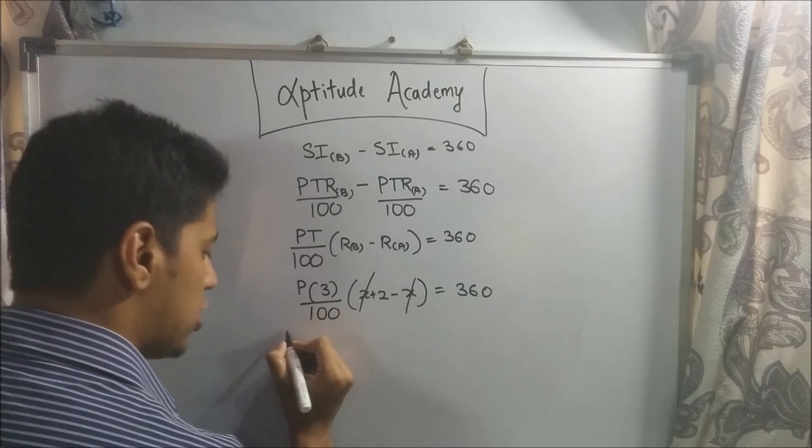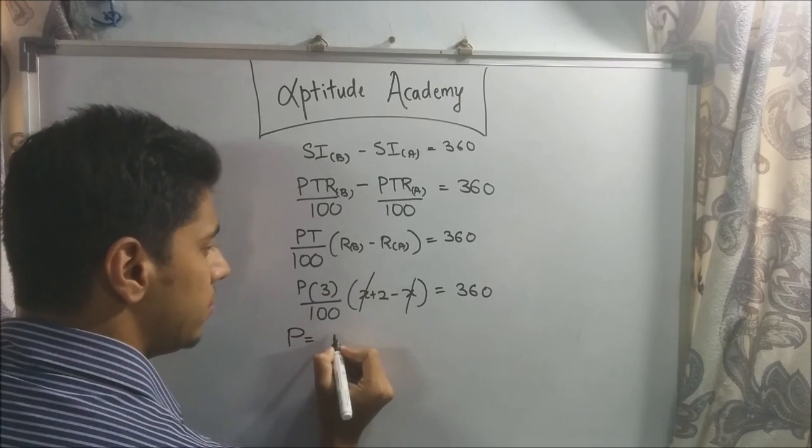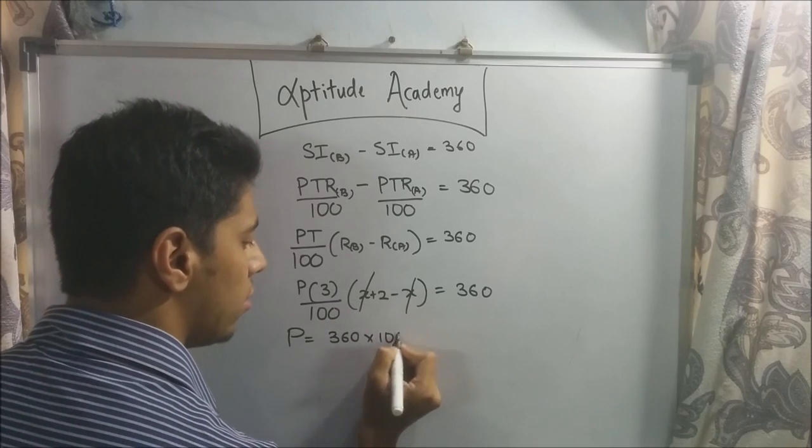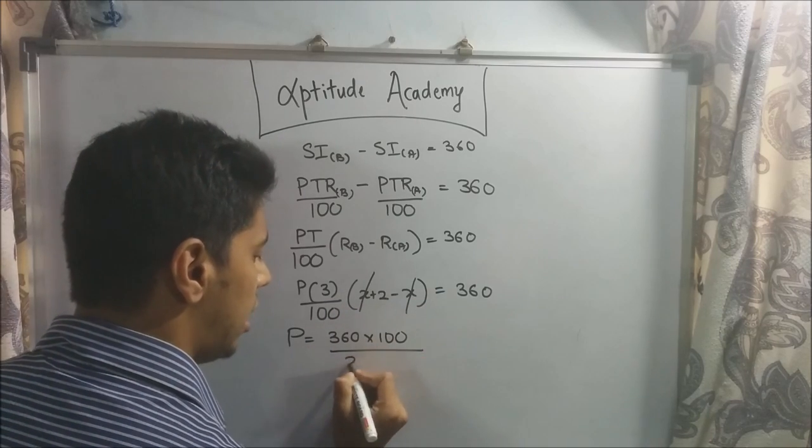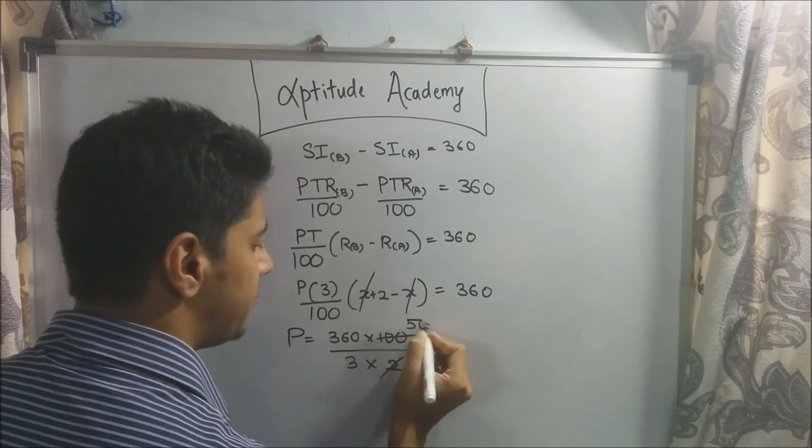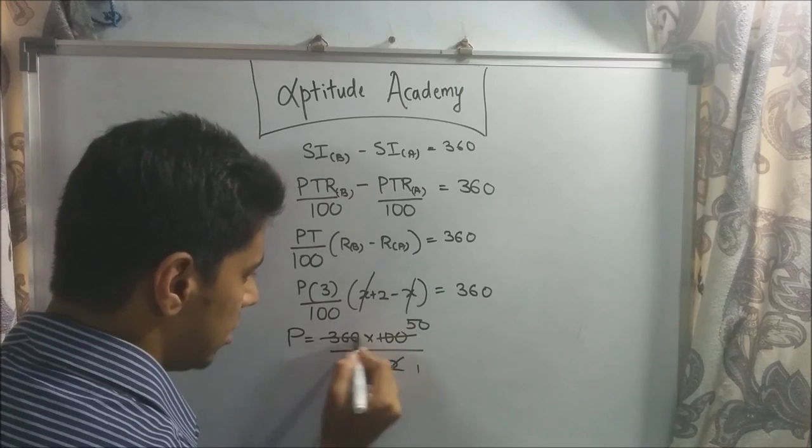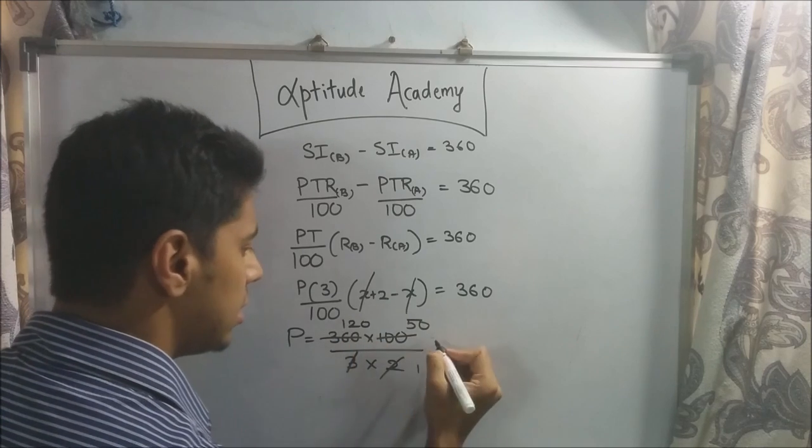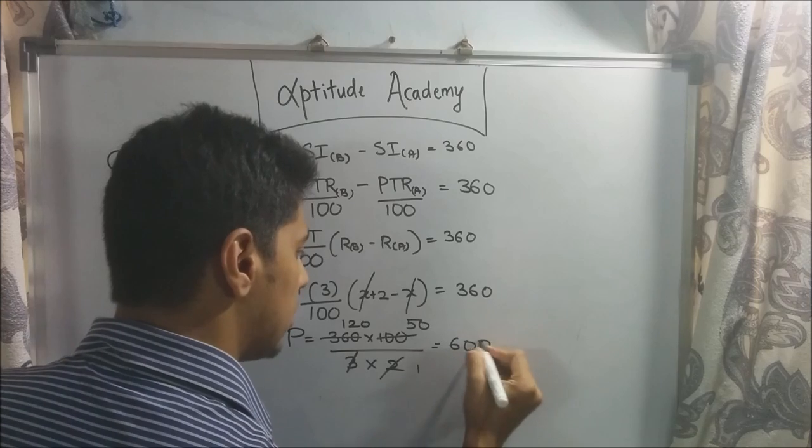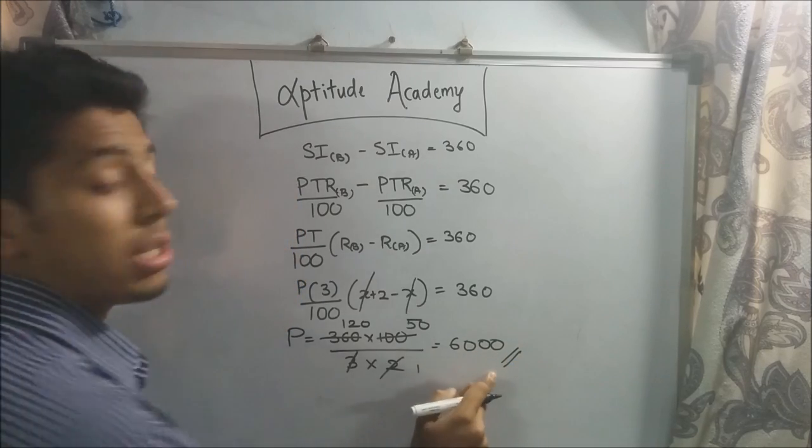Now, take everything on that side. Keep P on the LHS. So P equals 360 into 100 over 3 into 2. 2 ones are, 2 fifties are, 3 ones are, 3 one twenties are. So this will give you 6,000 rupees. This is your principal amount.